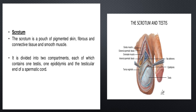Next is the cremaster muscle, internal spermatic fascia, vas deferens, epididymis, and the testes. The dartos muscle is the scrotal part of the dartos fascia, composed of smooth muscles. In the scrotum, the tunica dartos acts to regulate the temperature of the testicles, which promotes spermatogenesis.